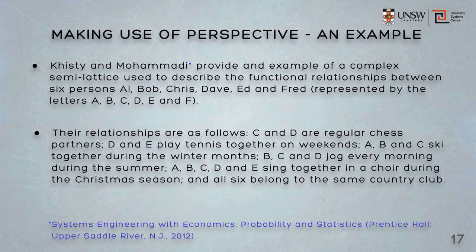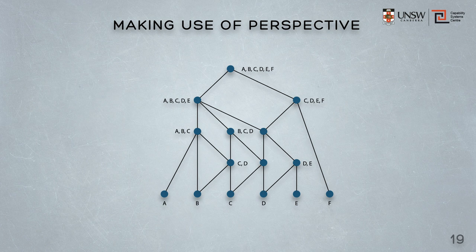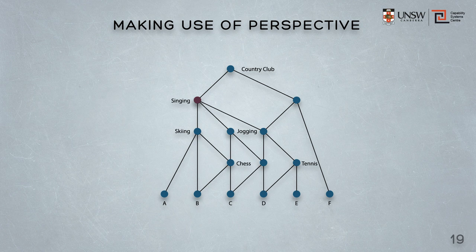The example then shows a semi-lattice, where there are cross-links between nodes at different layers. It's no longer a directed graph. The connectedness of that semi-lattice increases the complexity of the relationships between the six individuals. We can also consider our friends as a simple example of a number of systems — albeit six individuals in this case. Those six systems, those six individuals, come together to form a number of systems of systems, which are effectively six activities: a skiing system of systems, a chess system of systems, a tennis system of systems, a singing system of systems, a jogging system of systems, and a country club system of systems.